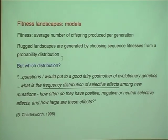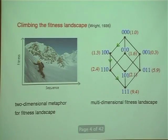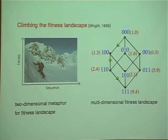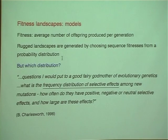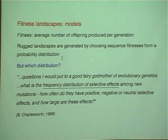As a theorist, I want to model fitness landscapes on my computer. I can generate rugged fitness landscapes by assigning fitness numbers drawn from a probability distribution to each sequence on the cube. But the question is: which distribution should I choose? This is an important question. What is the frequency distribution of selective effects among new mutations? When a mutation occurs, how many increase the fitness, how many decrease it, and how many keep it constant? We want to know how large these effects are.